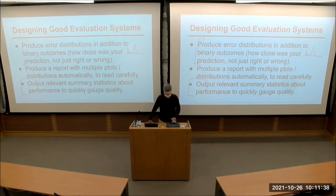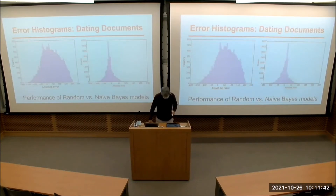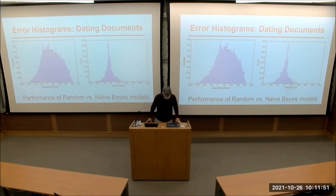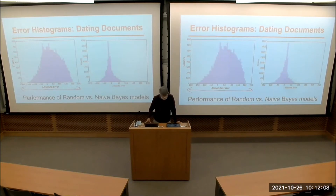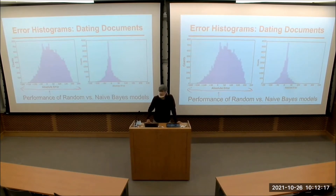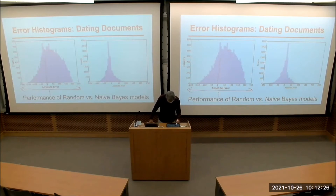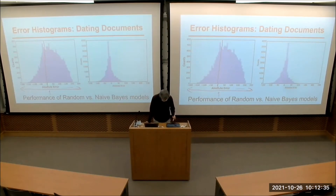It's important to produce the error distribution — not just what was the root mean squared error, but what the distribution of errors looks like. Ideally your errors in a regression system will be a bell-shaped curve; if you see spikes that probably tells you something. On the book dating project, when we built our test environment, we did a random evaluation as a baseline — randomly guessing a year from 1800 to 2000 — and looked at the error statistics.